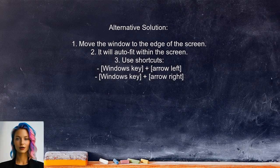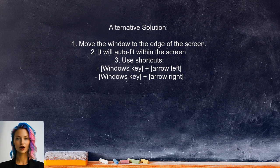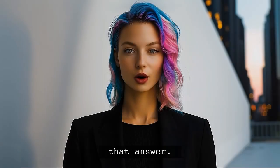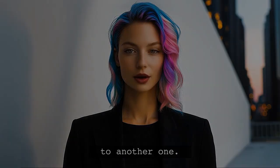One alternative solution comes from a user who suggests using Windows 10's built-in feature. They explain that when you move a window near the edge of the screen, it will automatically fit within the screen boundaries. Additionally, you can use keyboard shortcuts — specifically the Windows key combined with the left or right arrow keys — to snap the window to the edges.